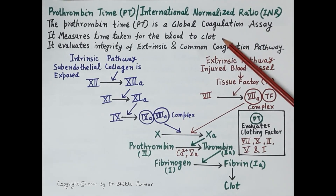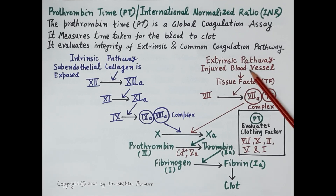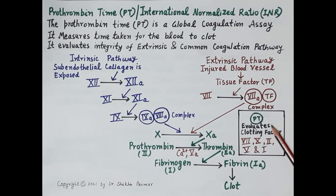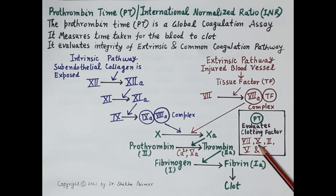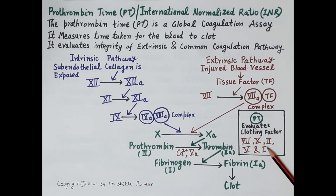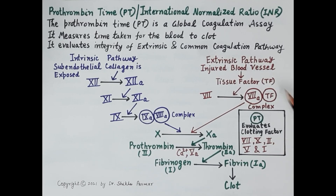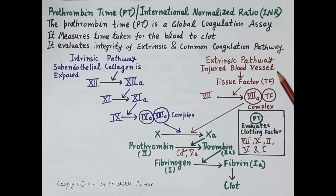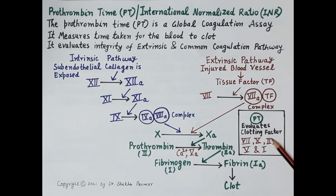Prothrombin time evaluates the functioning of clotting factors 7, 10, 2, 5, and 1, which are involved in the extrinsic and common pathways. As we know, warfarin is a vitamin K antagonist — it is an oral anticoagulant — and it inhibits the synthesis of clotting factors 2, 7, 9, and 10.